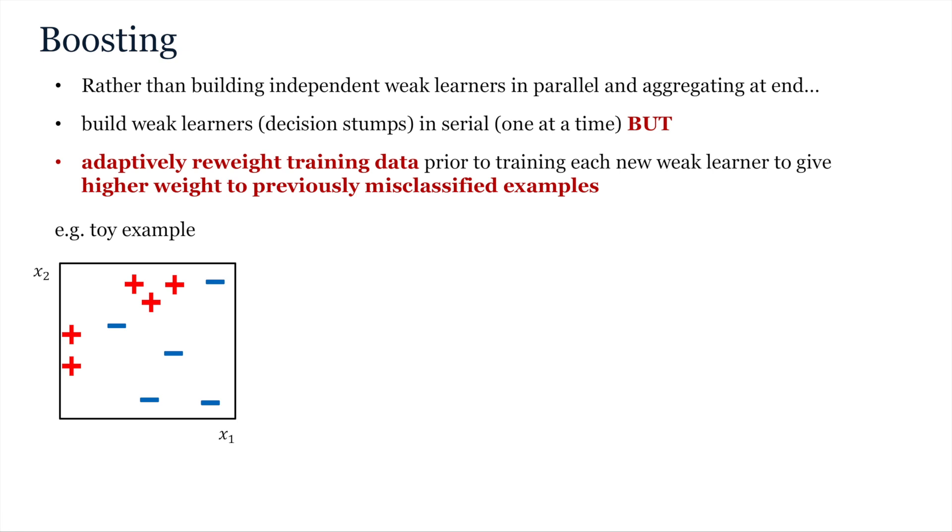Accordingly, we might imagine that for our first iteration we learn the threshold indicated by this box. This allows us to separate all of the minus signs from some of the crosses where we can see by doing this that while we get these two red crosses classified correctly, there are three more on the wrong side of the threshold that get left out.